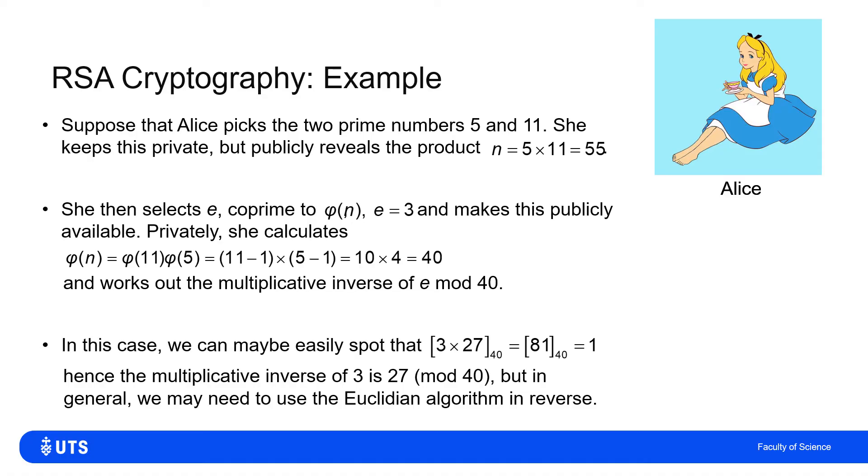In general, you might need to run the Euclidean algorithm in reverse to figure out what that multiplicative inverse is, but in this case, it's easy to spot.